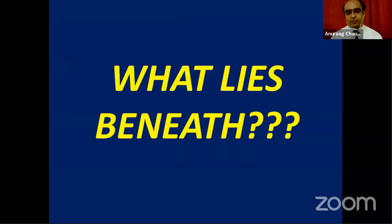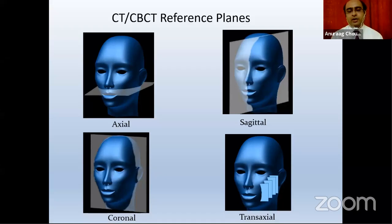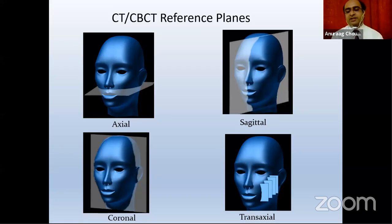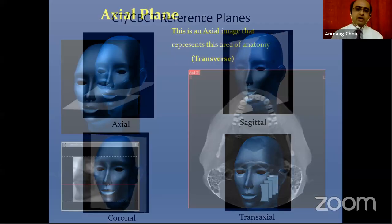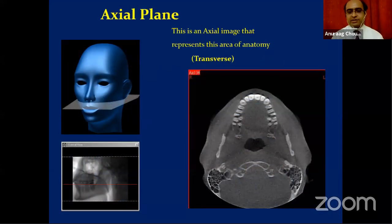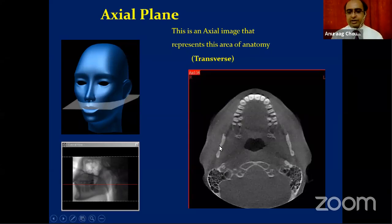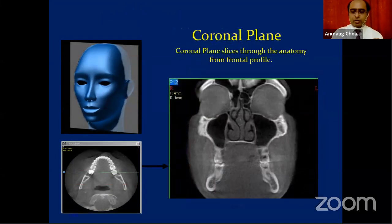When evaluating CT precisely, we have 3D scans and multi-planar reconstruction images. The basic reference planes used are axial, sagittal, coronal, and transaxial — also called MPR images. In the axial image, sections are taken along the long axis of the teeth; you can see the maxilla and condyle in this view.